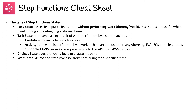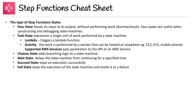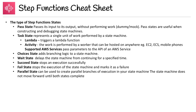The Succeed state stops an execution successfully. The Fail state stops the execution of the state machine and marks it as a failure. Parallel states can be used to create parallel branches of execution in your state machine — the state machine does not move forward until both states are complete, which is a very important state to know. Finally, the Map state can be used to run a set of steps for each element of an input array, which is great when iterating over a bunch of records in a database. And that's Step Functions.